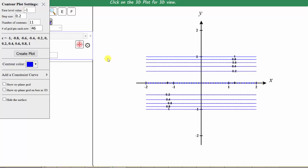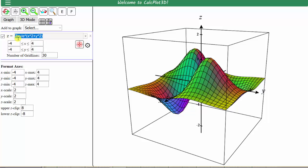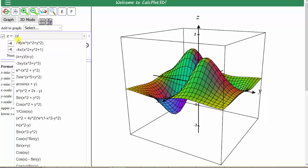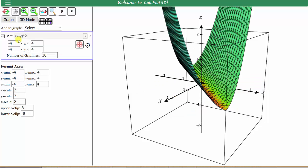Our last surface is f of x comma y equals the quantity x minus y squared. Let's exit this window, reset the app, enter our last function, which is z equals the quantity x minus y to the second. Graph.